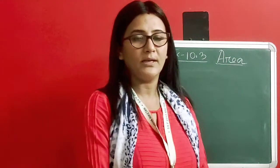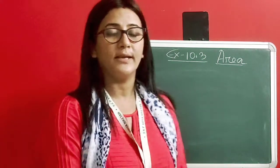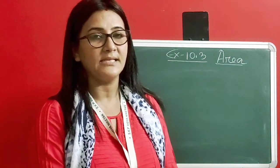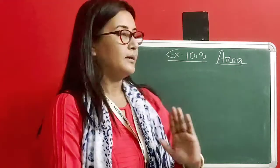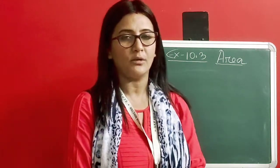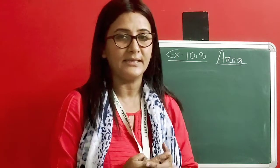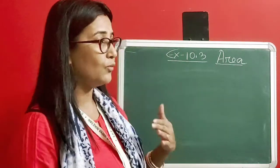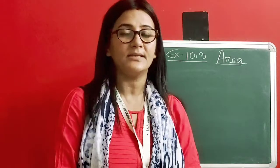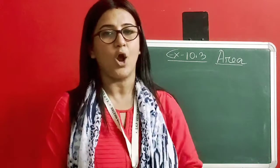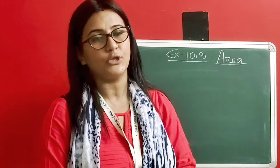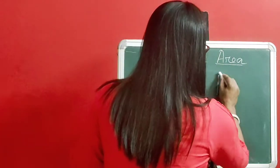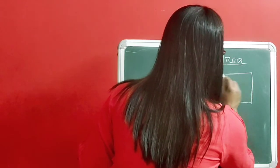A warm welcome back to the class. In our last topic we discussed exercise 10.1. Today we will discuss exercise 10.3. The topic is area. Previously we discussed perimeter — the total distance covered by the outer boundary of any object or surface is the perimeter. Now we will see what area is.